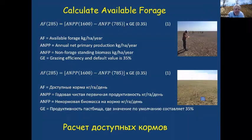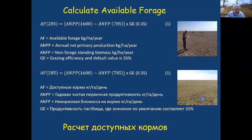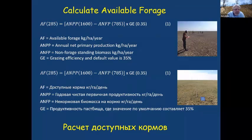To calculate available forage (AF) in kilograms per hectare per year: start with the above ground net primary productivity (ANPP) — for example, 600 kilograms per hectare per year — subtract the non-forage standing biomass (in this example 785), and multiply by the grazing efficiency of 0.35. This should result in available forage of 285 kilograms per hectare.